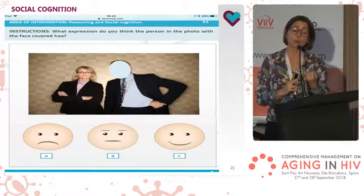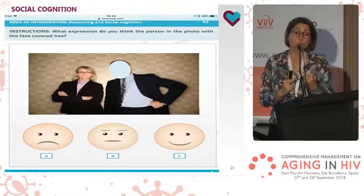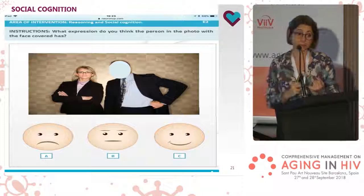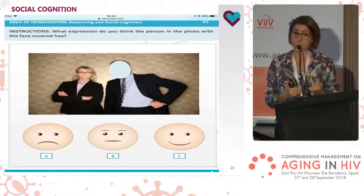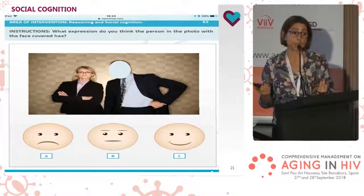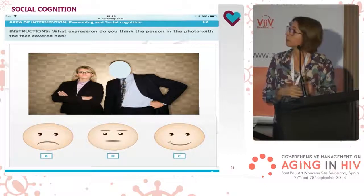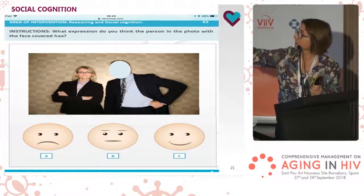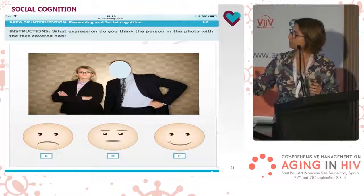Social cognition is another area of neurocognitive impairment, more commonly affected than we might think. For example, social cognition is altered in some neurodevelopmental illnesses such as Asperger's syndrome or schizophrenia — specifically the capacity of empathy. In this exercise, the patient has to decide which face in a picture best fits a given emotion.